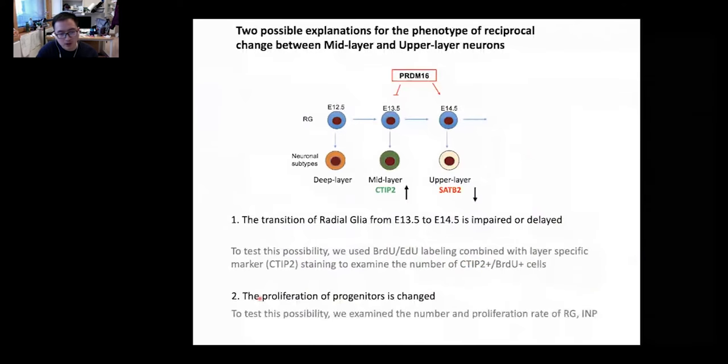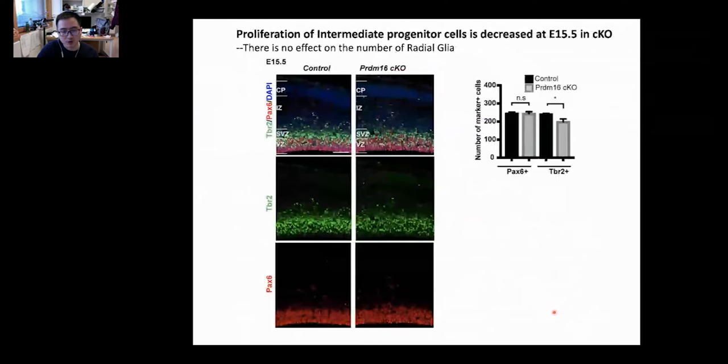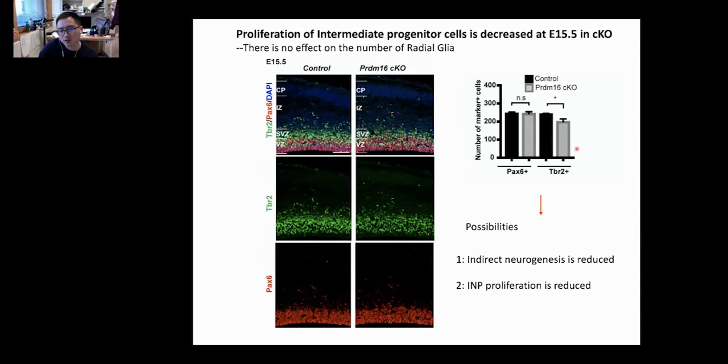To test the second possibility, we examine the number and proliferation of the progenitor cells. By using PAX6 to label the radial glia, you see there's no change. However, when you label the intermediate progenitors with TBR2, you see a slight reduction. There are two reasons to explain this phenotype. First, indirect neurogenesis is reduced. Second, INP proliferation itself is reduced.